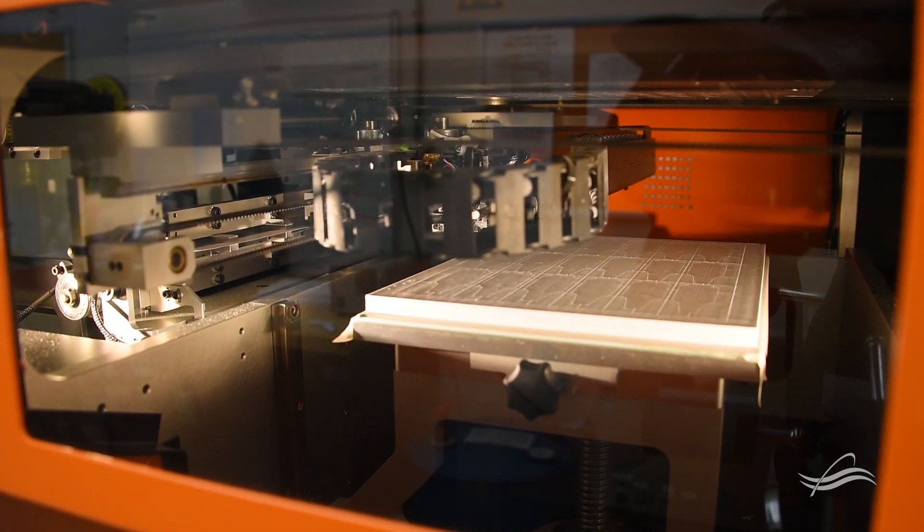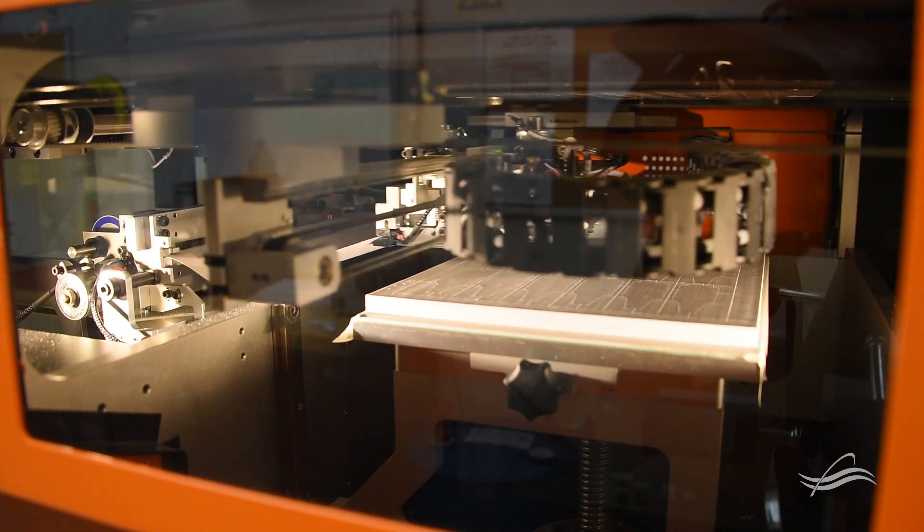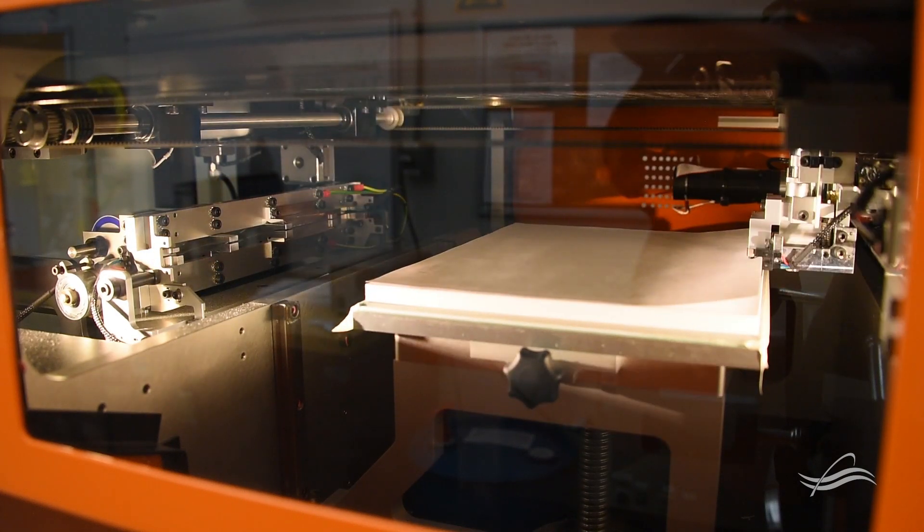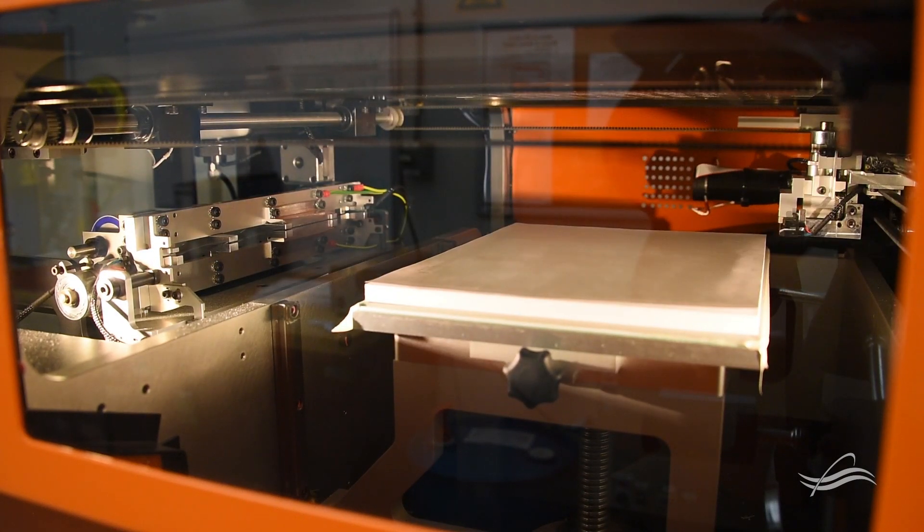The process is called selective deposition lamination. And so, sheet by sheet it's drawn in, cut, glued, and then a new sheet comes in, the process repeats.